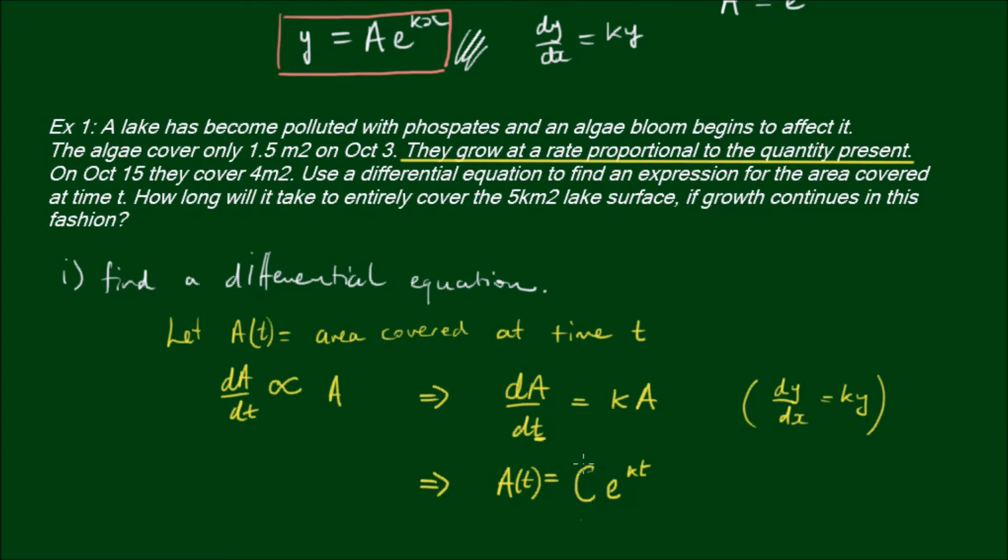Our dependent variable is the area, so we've got area as a function of time is equal to some constant times e to the growth factor times time. This is essentially of the same form as y equals A times e to the kx.